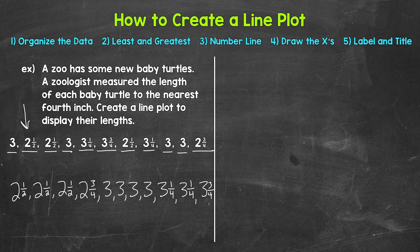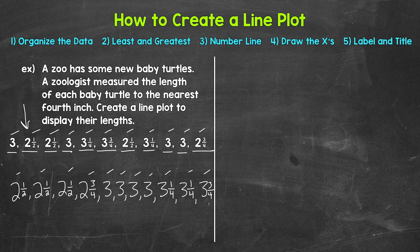Let's double-check by counting both lists to make sure they match. Counting the organized list: one, two, three, four, five, six, seven, eight, nine, ten, eleven turtles. Counting the original list: one through eleven as well. So we are good to go — we didn't skip anything or count anything twice. Our data is organized from least to greatest.